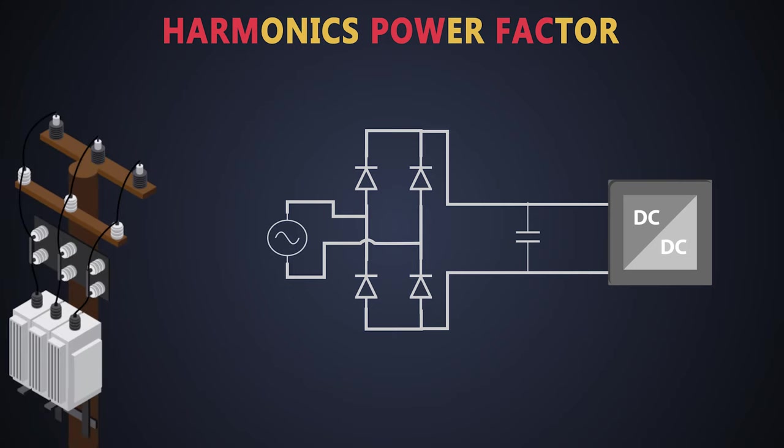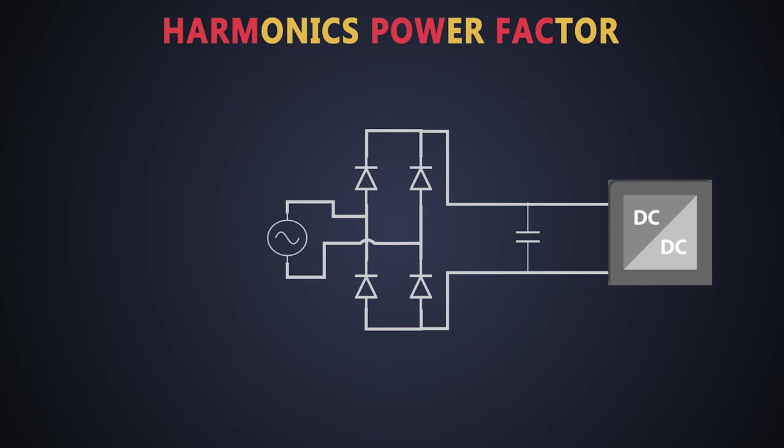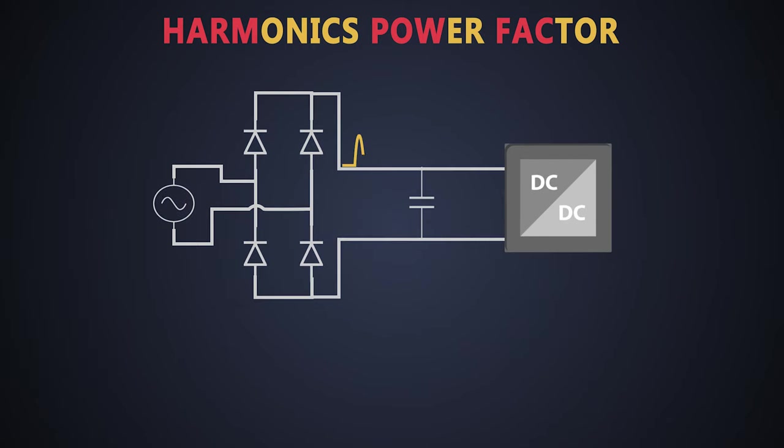This distortion of the current waveform returns back to the power grid, which reduces the efficiency of the grid and can cost us heavy penalties in the electricity bill. So to avoid such things, there are particular standard rules to limit the harmonic distortions in order to get the good power factor out of a power supply.